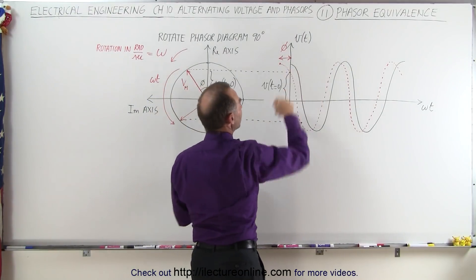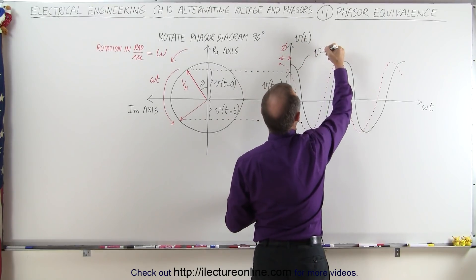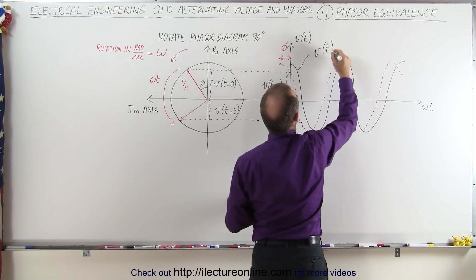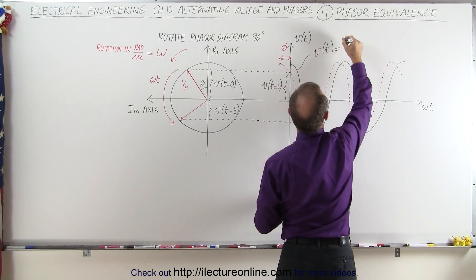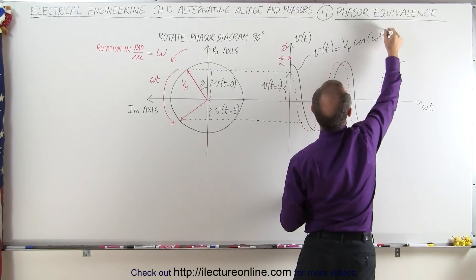So here we can see that if we have the, well let's just go ahead and write it here, this is the voltage as a function of time which would be equal to the maximum voltage times the cosine of omega t.